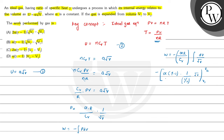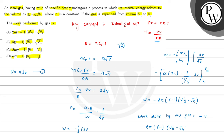So work done W comes out to be minus 2 alpha (gamma minus 1)(root V2 minus root V1). Therefore, the work done by the gas equals minus W, which is 2 alpha (gamma minus 1)(root V2 minus root V1). This is given in option A, so option A is the correct choice. Hope you understood it well. All the best and thank you.